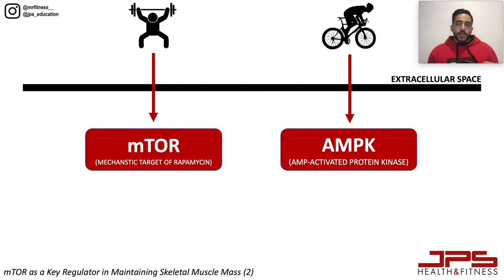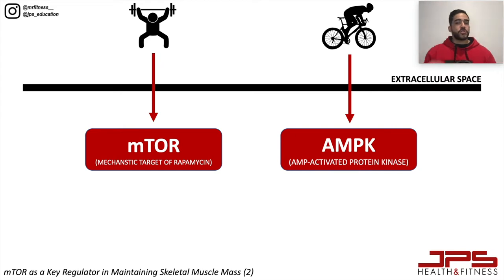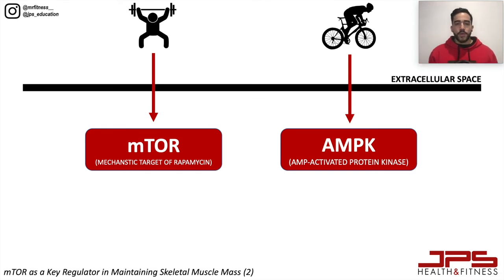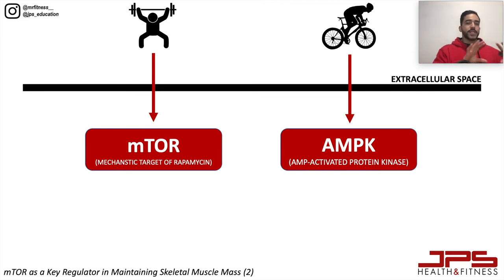What happens on a physiological level that leads to muscle protein synthesis is important to understand, because we're going to be speaking about nutrition strategies that can promote this growth response. Within our muscle cells, we have two main enzymes or protein complexes: one is named mTOR, or mechanistic target of rapamycin, and the other is termed AMPK, or AMP-activated protein kinase.